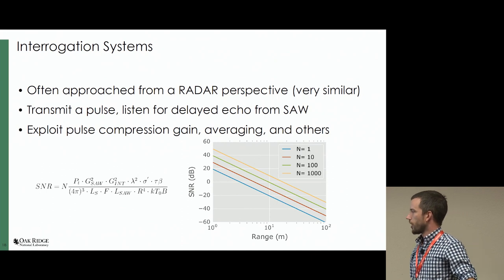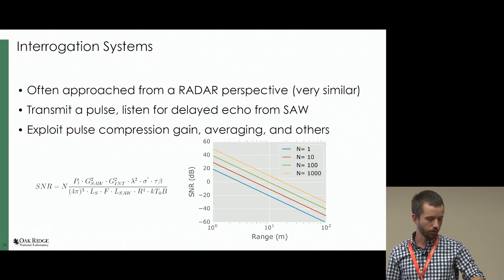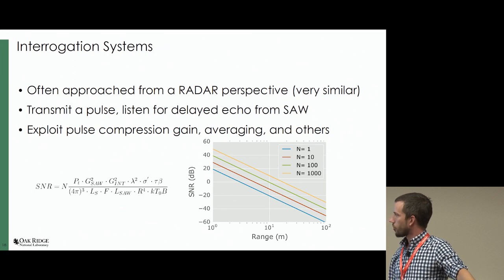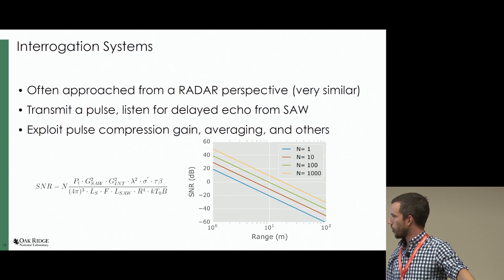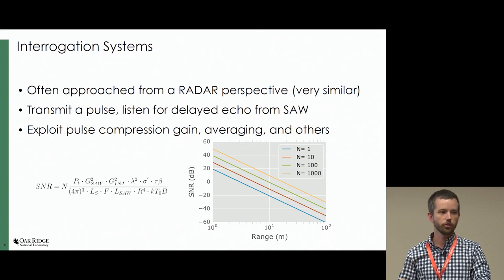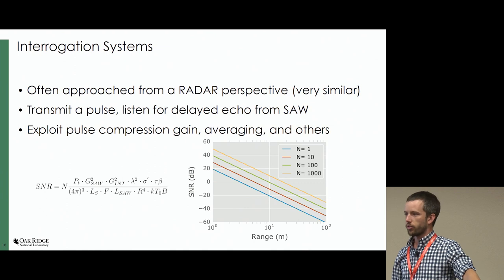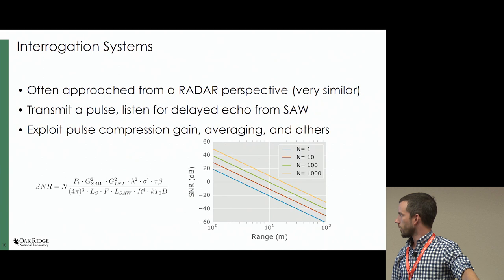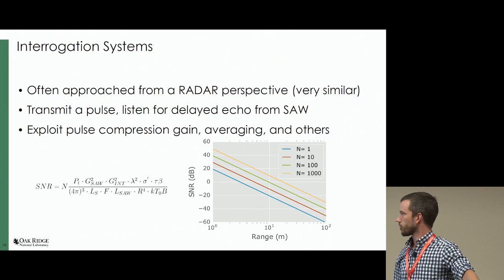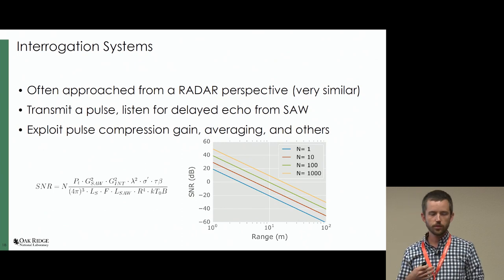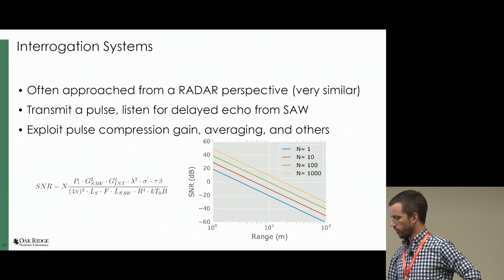The interrogation systems we're implementing with the radio often approach from a radar perspective. You can use a modified form of the radar equation to get the signal-to-noise ratio. You also have to consider the antenna on the sensor and the sensor's insertion loss, which could be another 10 to 20 dB of loss. Then you exploit all the other radar techniques to improve that — pulse compression gain, averaging, and power output in your hardware as well.